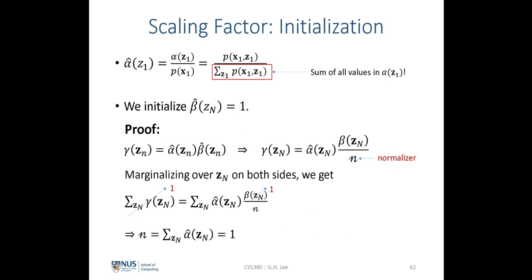The initialization of the scaled forward and backward algorithm: we initialize alpha-hat(z_1) to be alpha(z_1) divided by p(x_1), following the definition of the scaled alpha. This equals the joint probability distribution of x_1 and z_1 divided by the marginalization over z_1 of the joint probability of x_1 and z_1, which can be evaluated as p(z_1) multiplied by p(x_1 | z_1) as given by the graphical model.